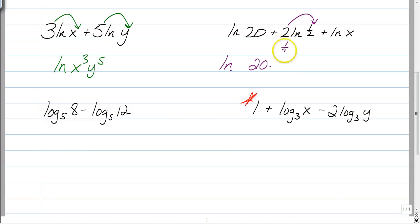So, what is 1 half squared? That would be 1 fourth. And then, we have our x. So, what is 1 fourth of 20? 5. So, we're just going to write this answer as ln of 5x. Done!